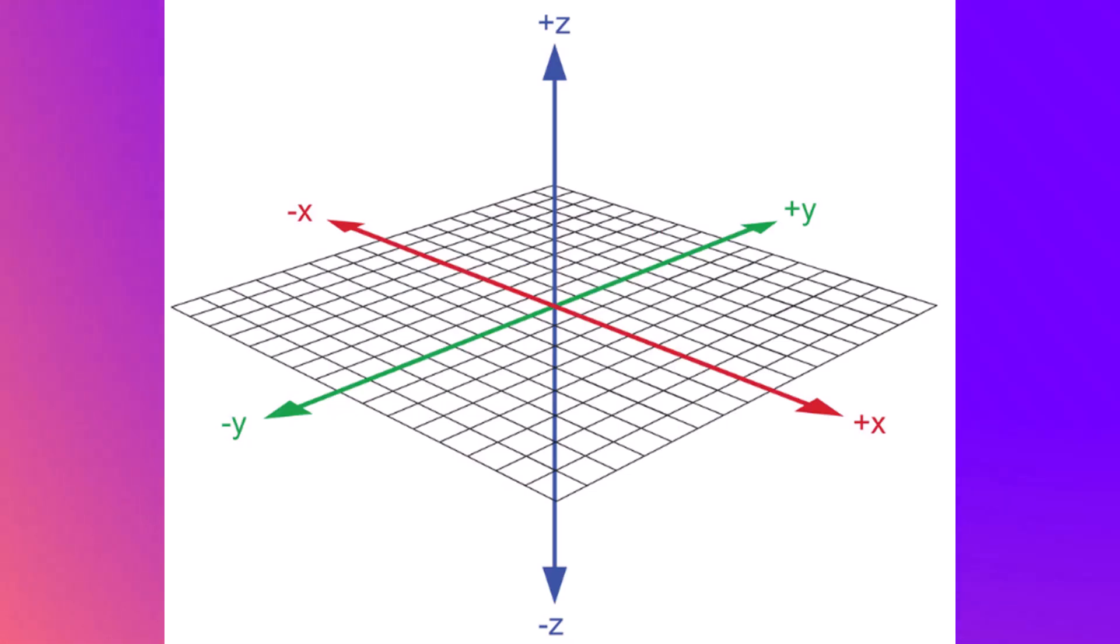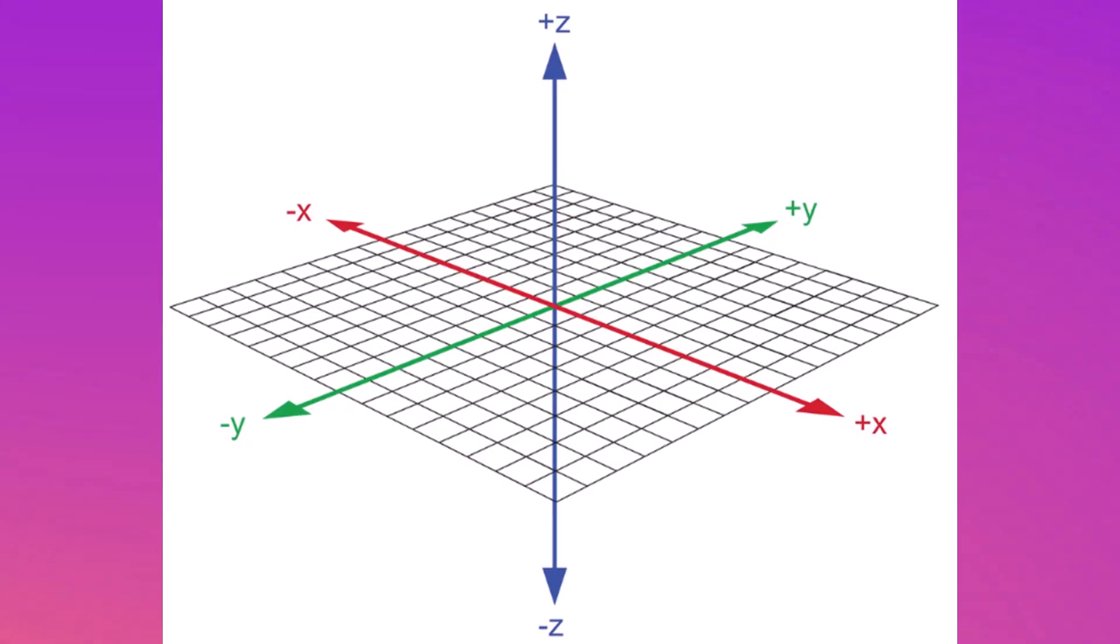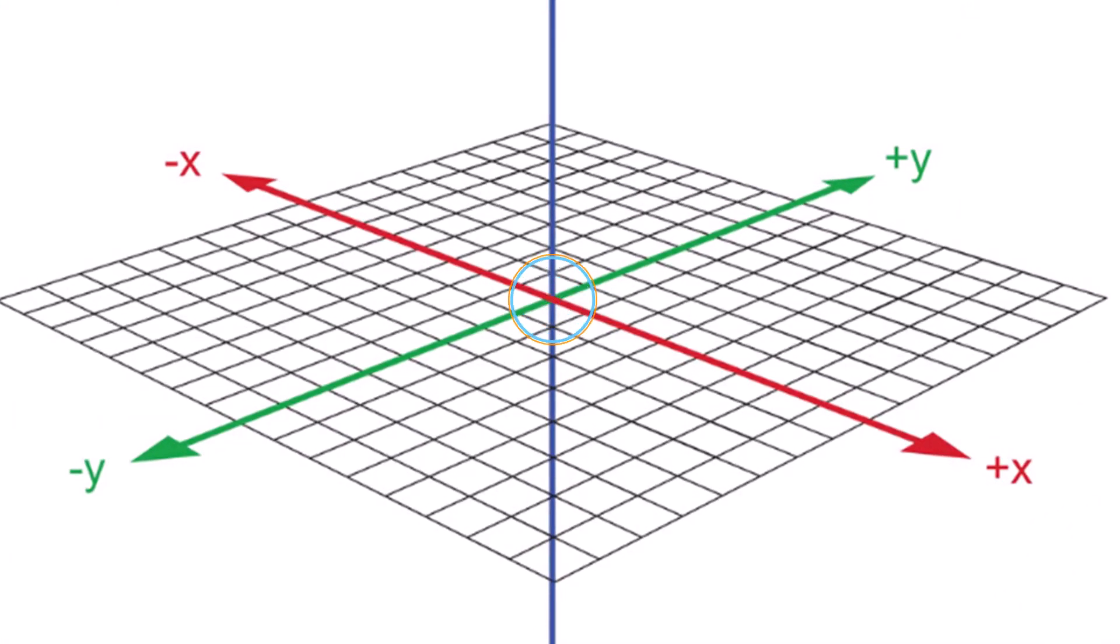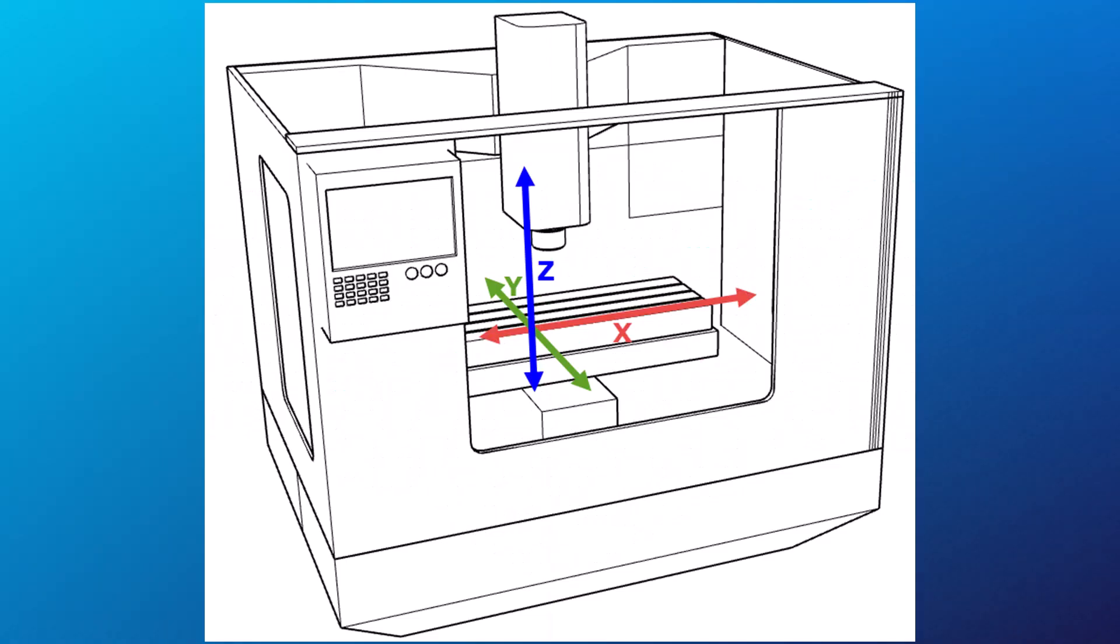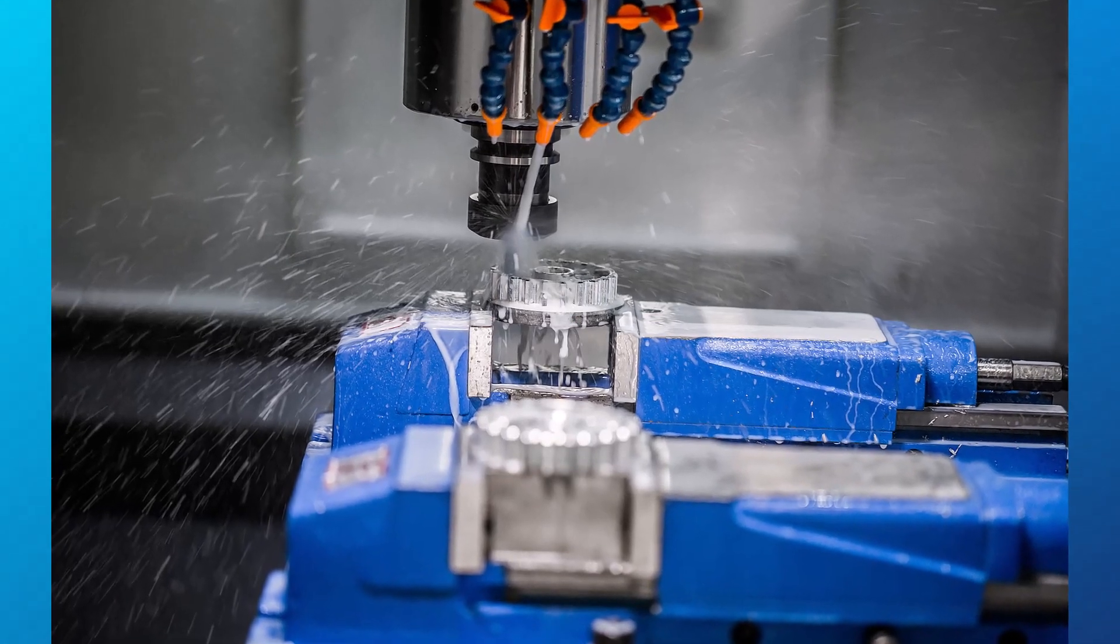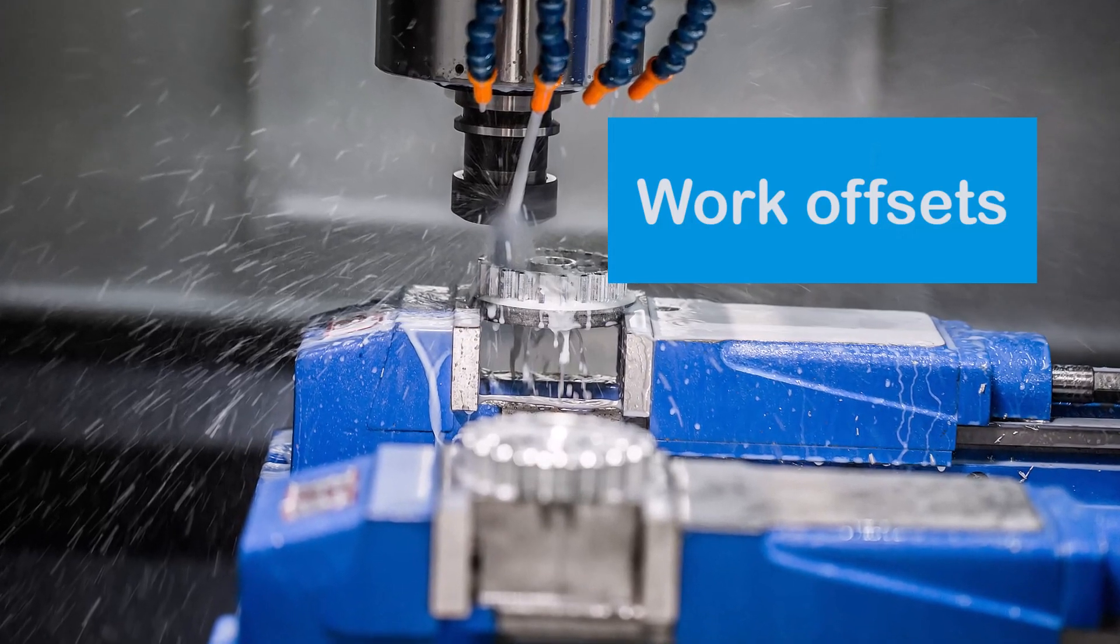Before we talk about the specific G-codes, let's clarify what work offsets are. In CNC machining, the zero or home point refers to the origin of the machine or the part we are working on. However, sometimes we may want to establish multiple zeros or origins. These are what we call work offsets.